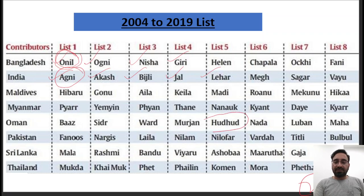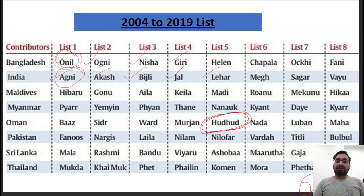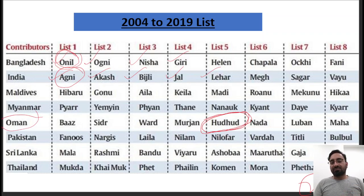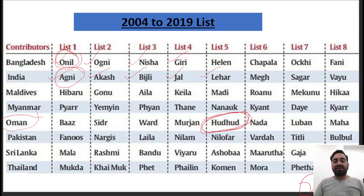Earlier there was Cyclone Hudhud, which created a lot of destruction on our east coast — particularly Andhra Pradesh and Odisha — in October 2014. The cyclone created a lot of destruction in India, but the name was given by Oman. So people got confused: the cyclone came on the east coast of India — how can Oman give the name? But we had a systematic naming system in place. After Hudhud, there was another cyclone and the name was given as Nilofar, and so on. This list got over in 2019.